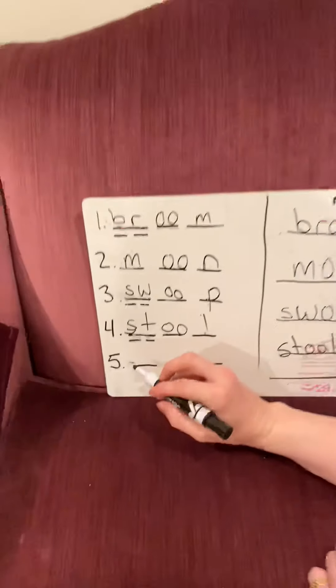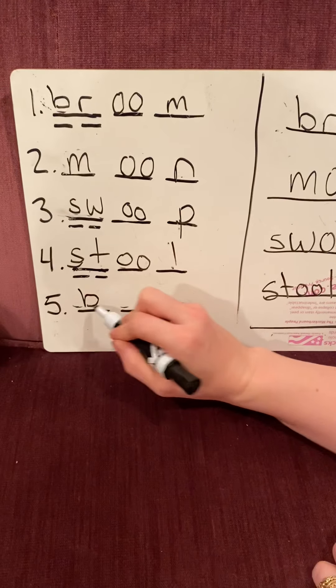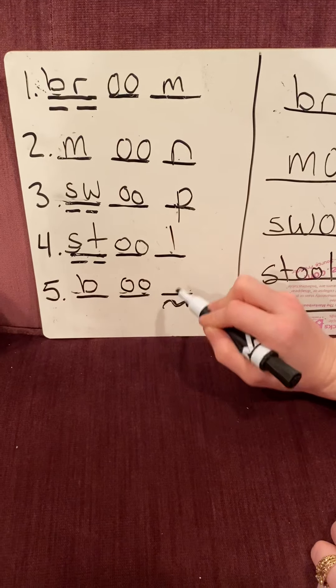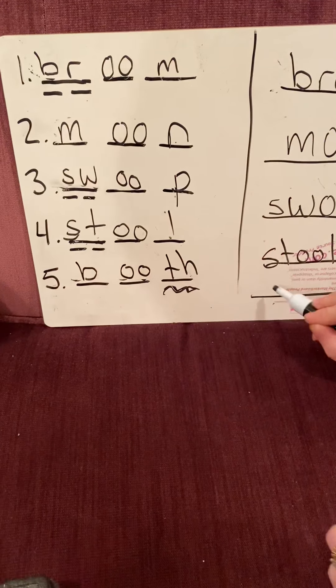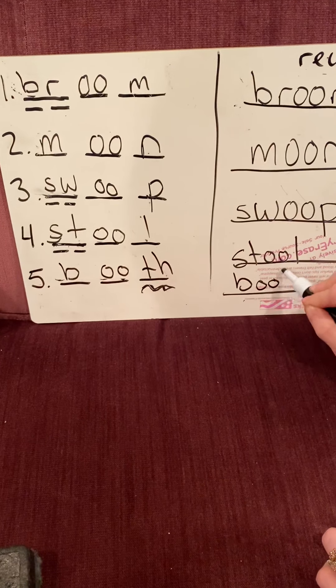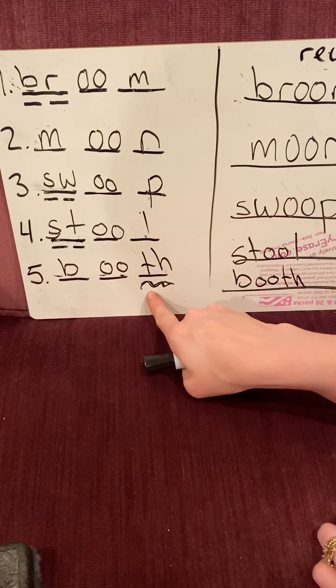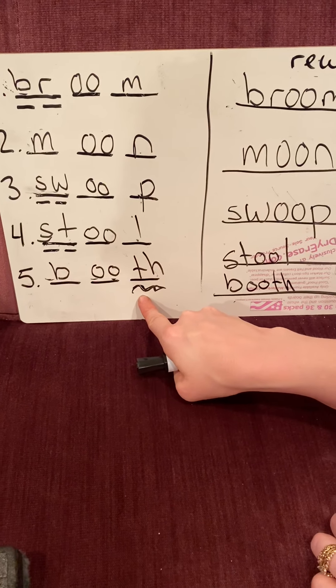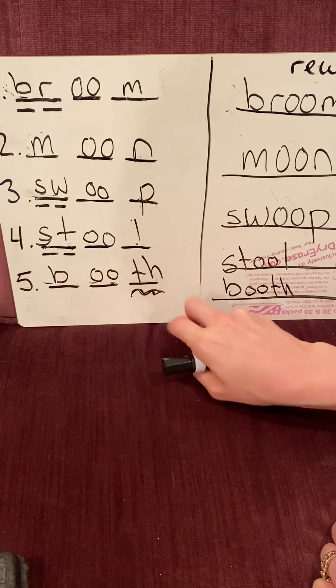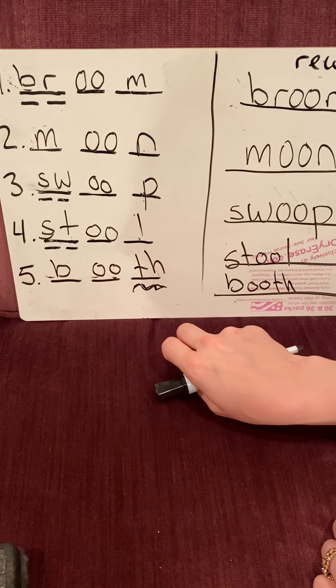Number five is booth. Hopefully you paused it. Let's check it together. Booth. Make sure you rewrite it. Now at the end there, that's our digraph of th. A digraph is two letters together that make a different sound when put together.